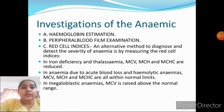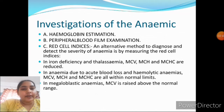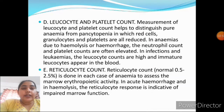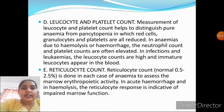In anemia due to acute blood loss or hemolytic anemia, MCV, MCH, and MCHC are within normal limits. In megaloblastic anemia, MCV is raised above the normal range. Leukocyte and platelet counts are measured to distinguish anemia from pancytopenia, in which red cells, granulocytes, and platelets are all reduced.